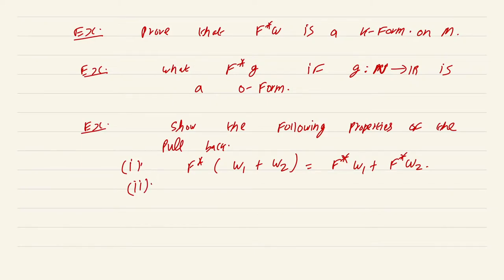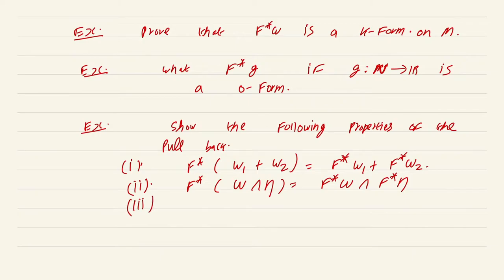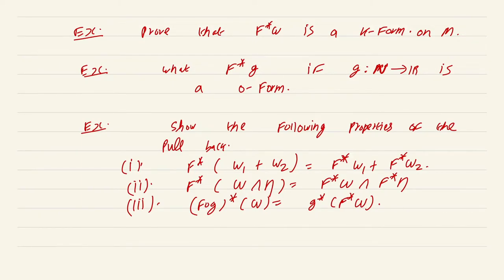Third exercise: show the following properties of the pullback. First, linearity: f star of (omega_1 + omega_2) is f star omega_1 plus f star omega_2. Second, behavior with respect to wedge products: f star of (omega wedge eta) is f star omega wedge f star eta. Third, when you compose two maps f and g: (f composed with g) star of omega equals g star of f star omega. This third property says that the composition gives a chain rule with a reversal of directions — essentially saying we have a contravariant functor.